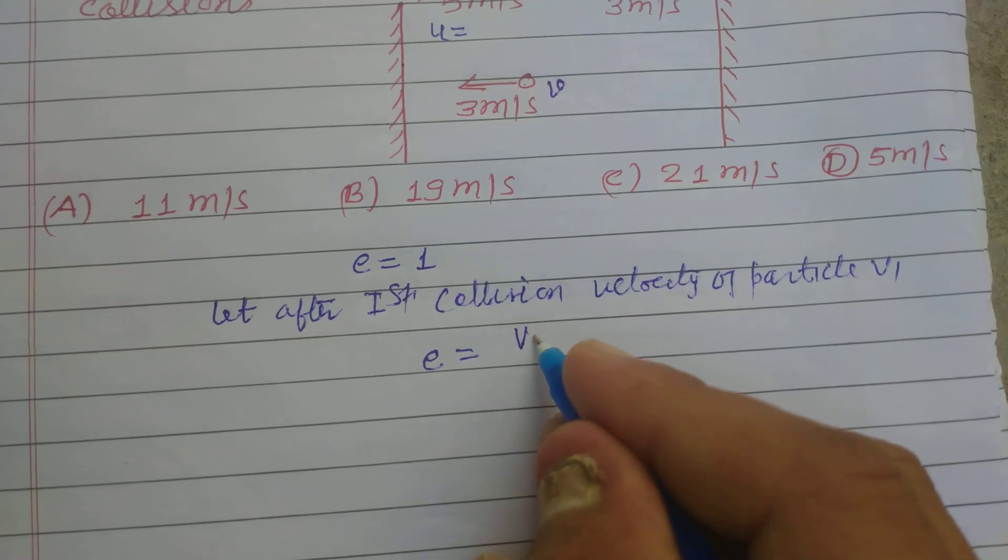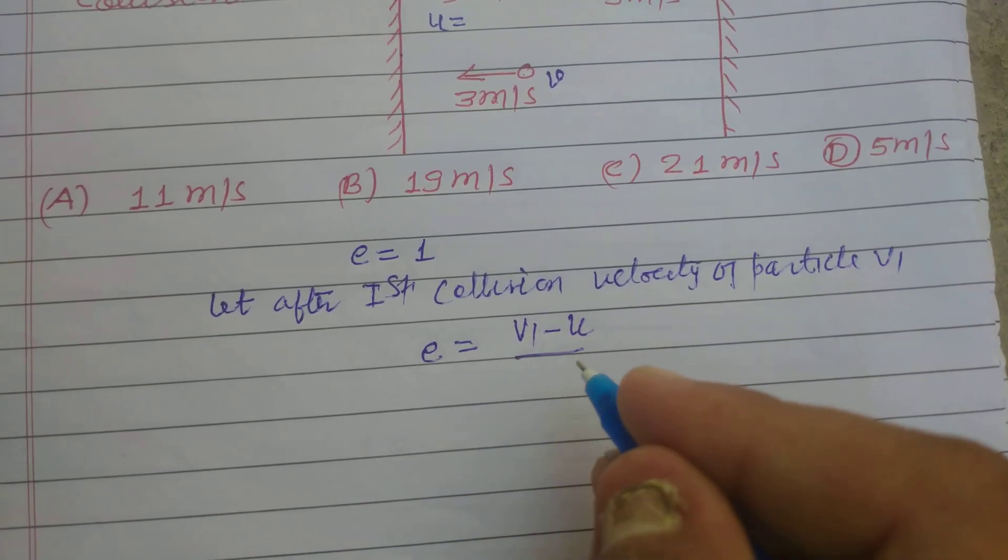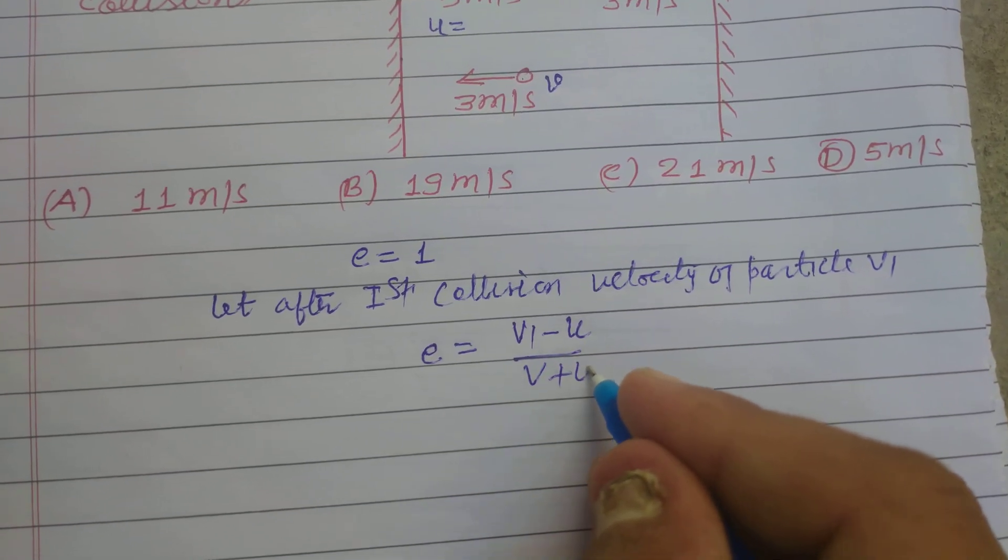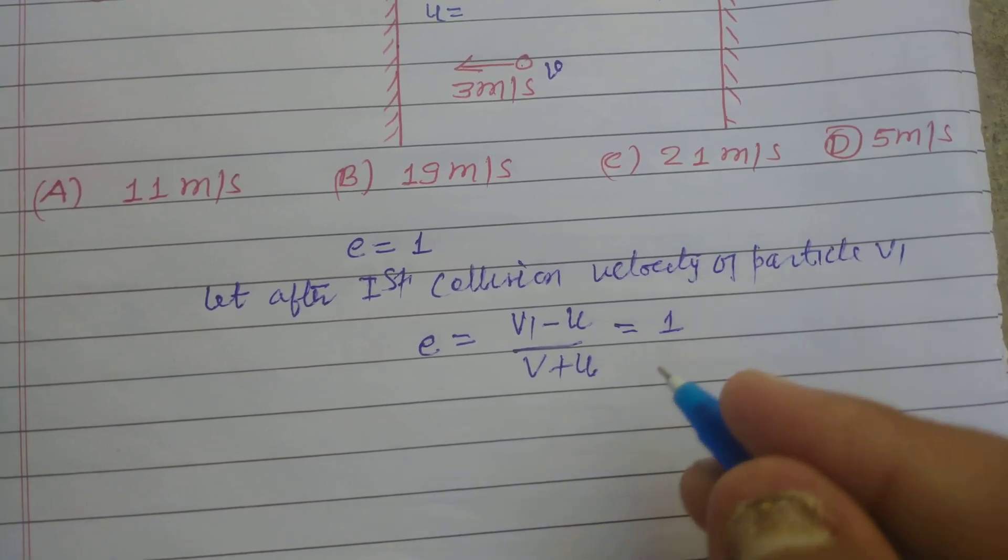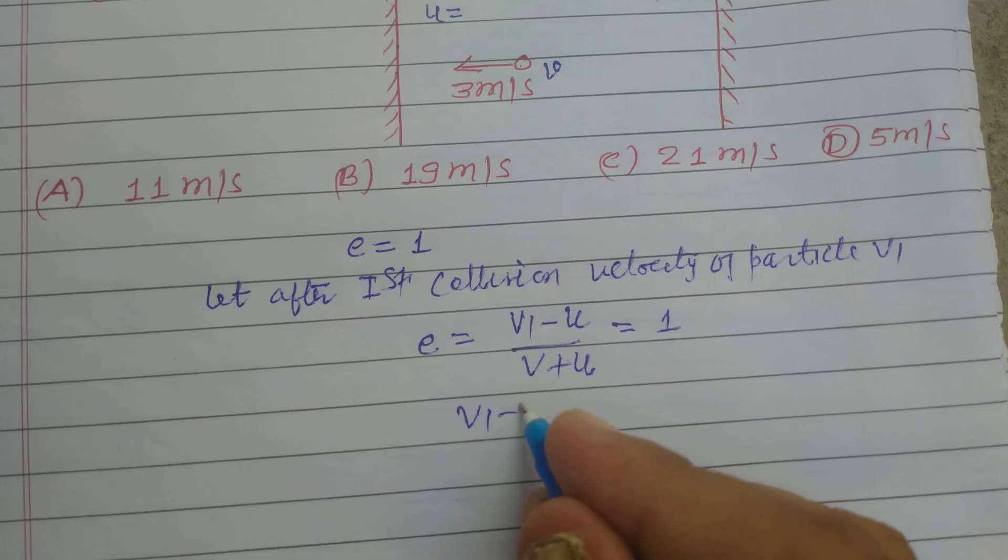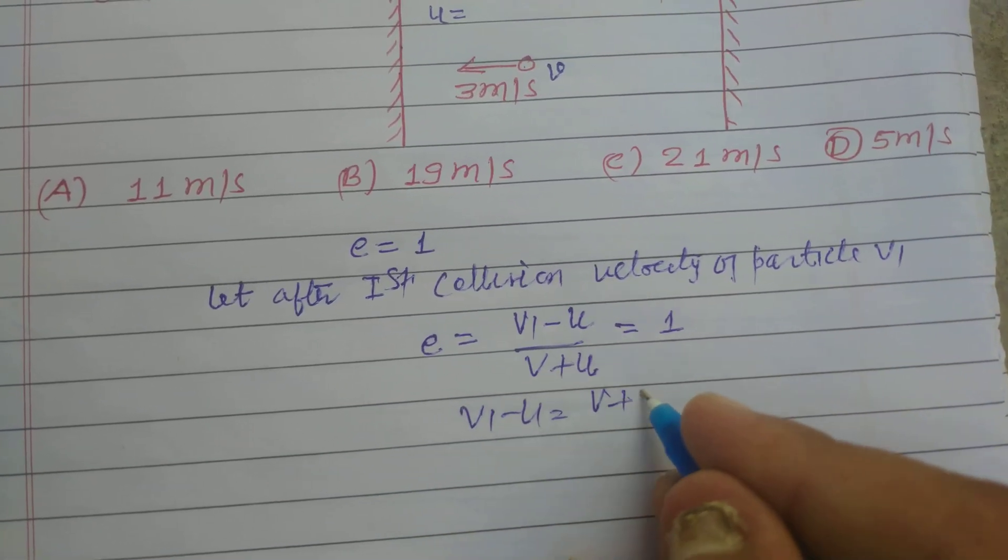Using the concept of coefficient of restitution, E equals v1 minus u upon v plus u. This will be 1 for elastic collision. So v1 minus u equals v plus u.